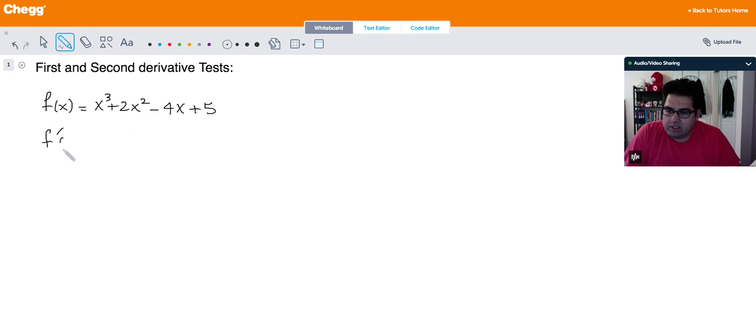First I'm trying to find the critical numbers or the extremas. So I take the derivative of the function: 3x squared plus 4x minus 4 equal to 0. Now, by setting it equal to 0, I'm trying to find the extremas. So I use the quadratic formula: x equals negative b plus minus square root of b squared minus 4ac divided by 2a.